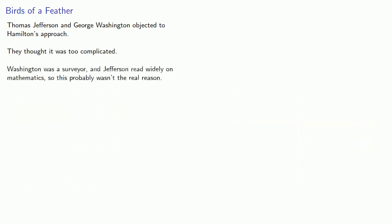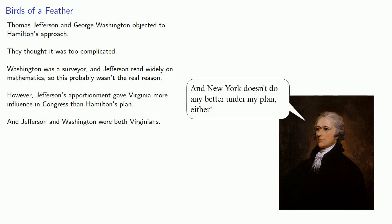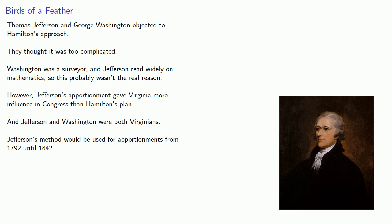Now, remember, Washington was a surveyor and Jefferson read widely on mathematics, so this probably wasn't the real reason. In fact, Jefferson's apportionment gave Virginia more influence in Congress than Hamilton's plan did, and Jefferson and Washington were both Virginians. Jefferson's method would be used for apportionments from 1792 until 1842.